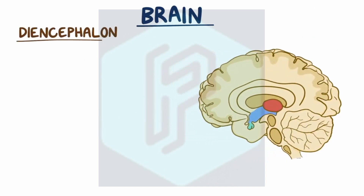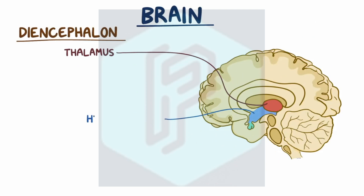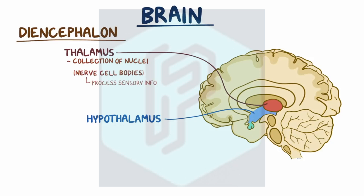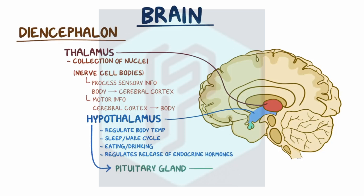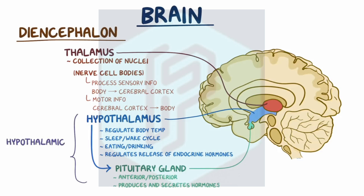Next there's the diencephalon, composed of an upper part called the thalamus and a lower part called the hypothalamus. The thalamus is a collection of nuclei — millions of nerve cell bodies — that process sensory information coming in from the body to the cerebral cortex, as well as motor information going from the cerebral cortex to the body. The hypothalamus is a small region that regulates body temperature, the sleep-wake cycle, and eating and drinking by regulating the release of major endocrine hormones. The hypothalamus sends signals to the pituitary, a pea-sized gland hanging by a stalk from the base of the brain, with anterior and posterior parts. Together they form the hypothalamic-pituitary axis.